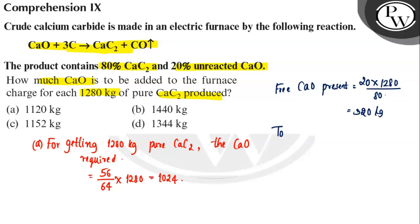The total amount, if we calculate 1024 plus 320, will be equal to 1344 kg. So our option is option D is the correct answer. I hope you understand it well. All the best.